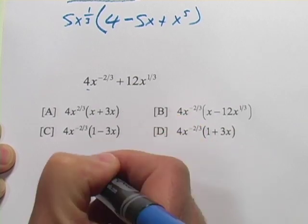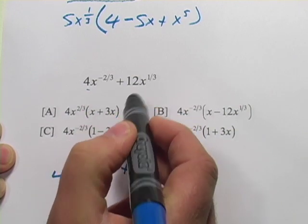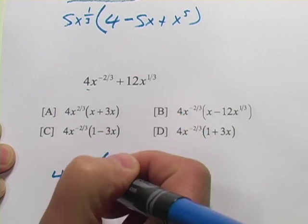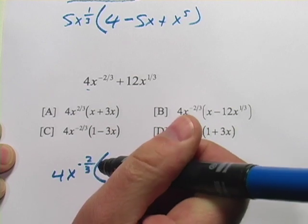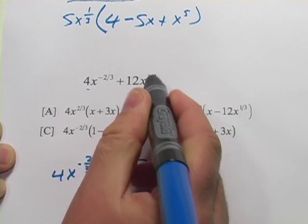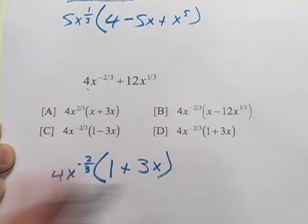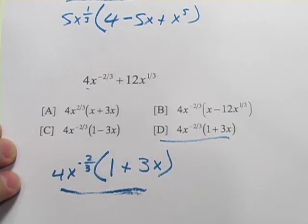Now, x to the 1/3 minus a negative 2/3, right? We're dividing by x to the negative 2/3, so we're subtracting the exponents. So 1/3 minus a negative 2/3, well, that's like adding 2/3. So this becomes x to the 3/3, or just plain old x. So that is how we factor that one, and that looks like it's D. So that is a little bit of work with factoring negative and fractional exponents.